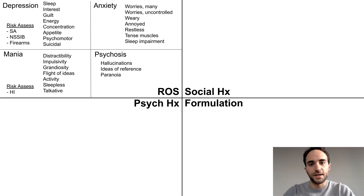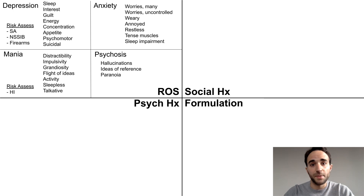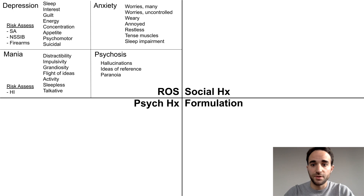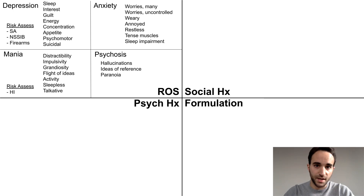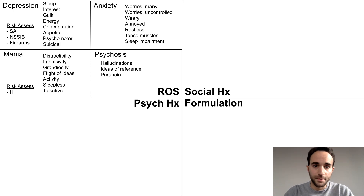Finally is psychosis. Some of the core symptoms of psychosis can be determined through your mental status exam — for example, disorganized thinking, disorganized behavior, and negative symptoms. Therefore, focus on asking about hallucinations and two of the most common kinds of delusions in psychosis: ideas of reference and paranoia.